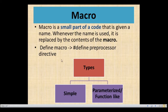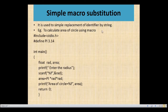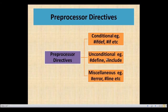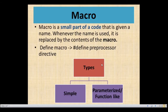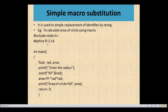Using the hash define preprocessor directive, we can define macros. There are two types of macro: simple macro and parameterized macro. Simple macro substitution is used for simple replacement of an identifier by a string — for example, using the constant pi as 3.14. Hash define pi 3.14. No semicolon is needed here. Each and every preprocessor directive starts with a hash sign and there is no semicolon.